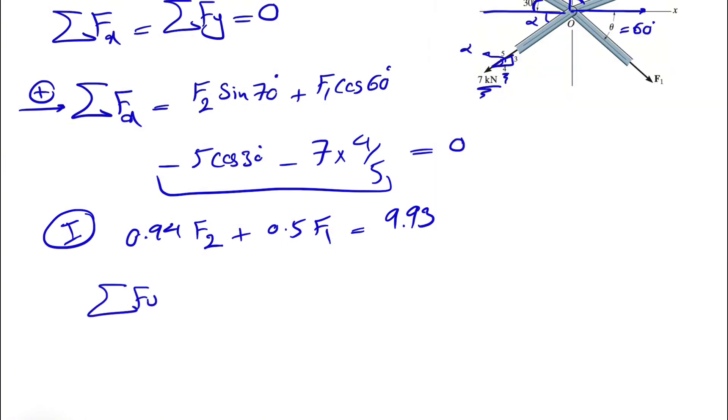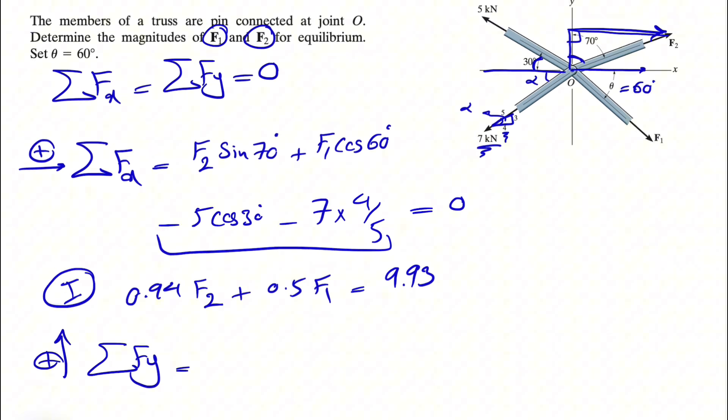Let's move on to the sum of all forces in Y, and we can consider that positive. Let's go with F2. This time we have F2 cosine of 70 degrees. F1, the Y component is downward, so we have a negative sign, minus F1. This time instead of cosine, we have sine of 60 degrees. The 5 kilonewton, the Y component is upward, 5 times sine of 30 degrees, and the 7 kilonewton is negative. This time we have the vertical side, which is 3 over hypotenuse, is equal to 0.